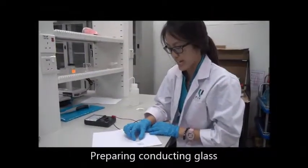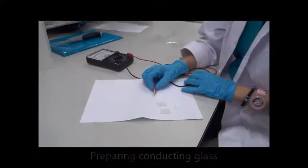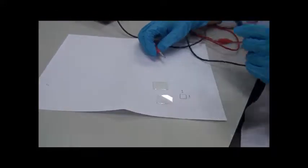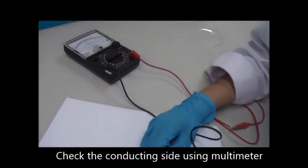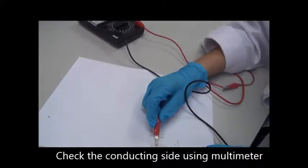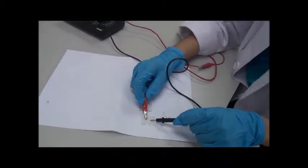We need to prepare two conducting glass. In order to check the conducting side of the glass, we're using a multimeter to check. So this one is the conducting side, and then the other one, this one is the conducting side.